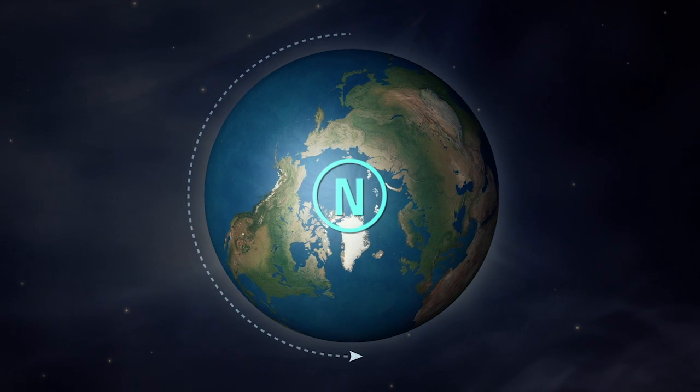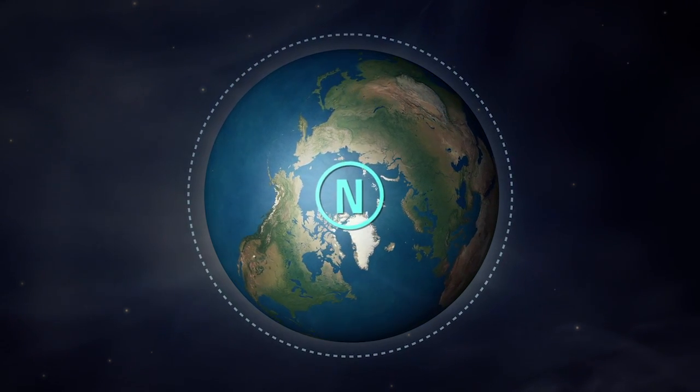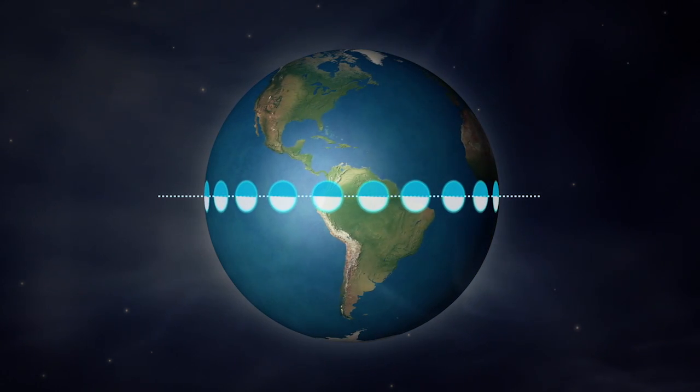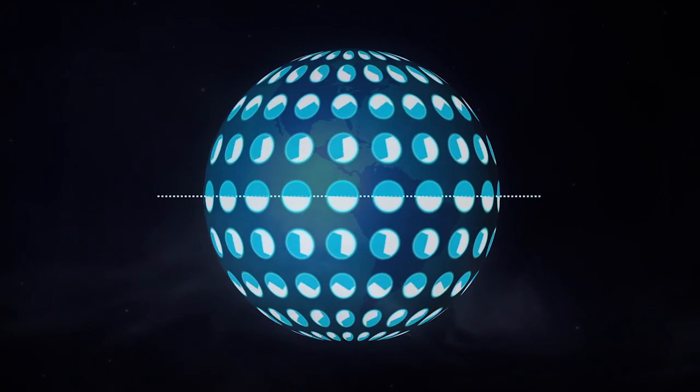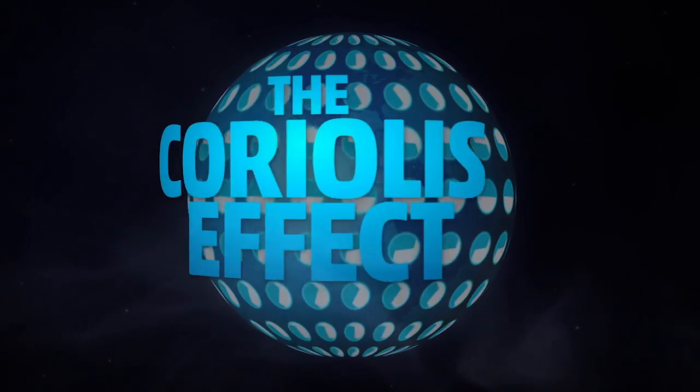You see, hurricanes acquire spin from the rotation of the earth. The influence of this spin is zero at the equator, but it increases as you travel toward the poles. This force is known as the Coriolis Effect,